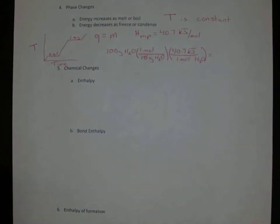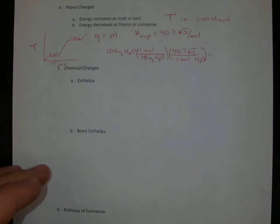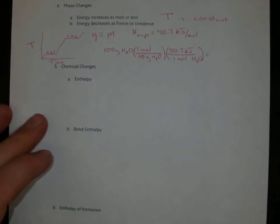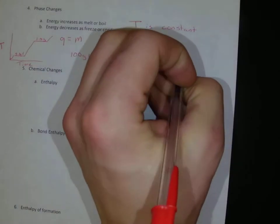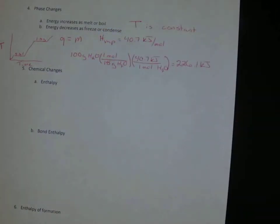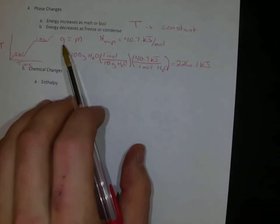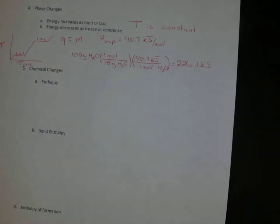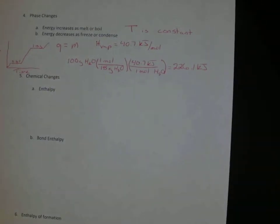So let me grab my calculator. 100 divided by 18 times 40.7 is going to tell me that I need 226.1 kilojoules to boil all of my 100 grams of water. So that is the calculations that we need to do with a phase change.